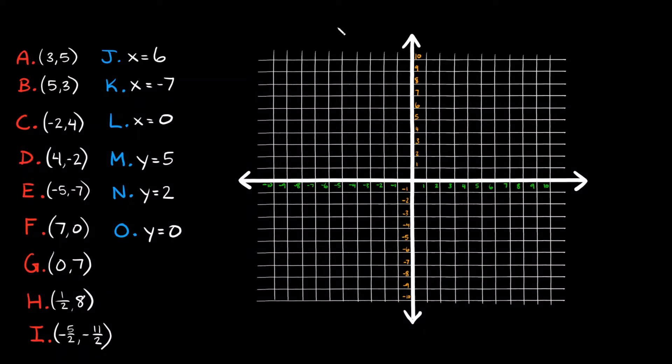What's up you freaking geniuses! So in this video I'm going to teach you how to plot points on the coordinate system, or coordinate plane. We're going to start with some easier-ish examples, and then we're going to get into some that are not so obvious. To not make this video too long, I'm just going to do the examples that you see in red — A through I. In the next video we'll cover the rest because they're a little bit more complicated, and that way I don't destroy your precious mind in just this video.